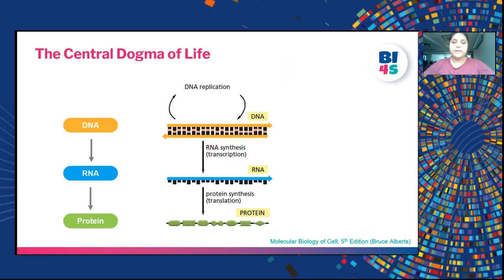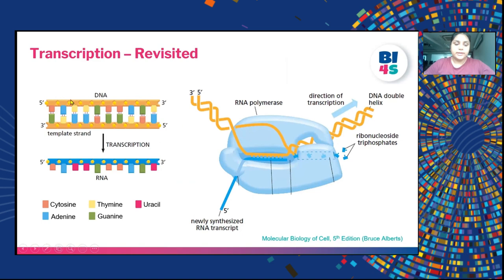As you have already learned in previous videos such as lectures 3 and 4, transcription involves a double-stranded DNA. One strand goes from 5' to 3' and the other strand goes from 3' to 5'. The 3' strand acts as the template strand and leads to transcription of RNA with the help of RNA polymerase, which opens the DNA and transcribes RNA from 5' to 3' using the 3' to 5' DNA strand as a template.